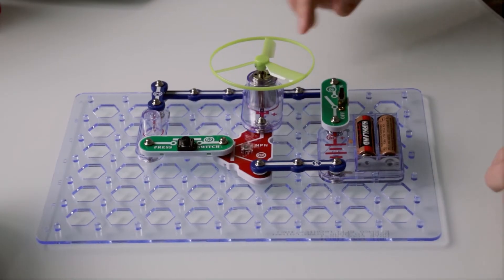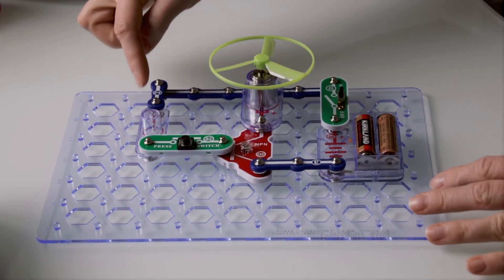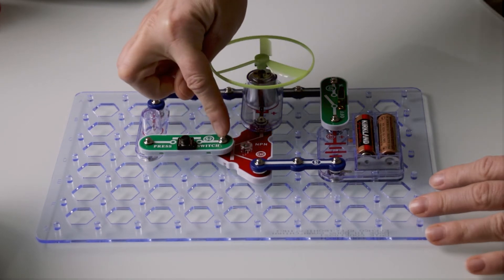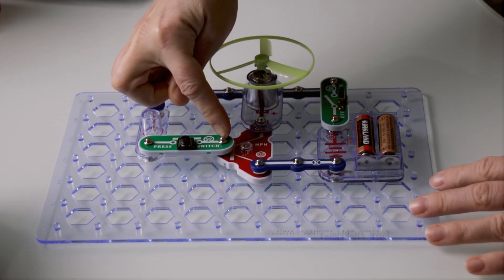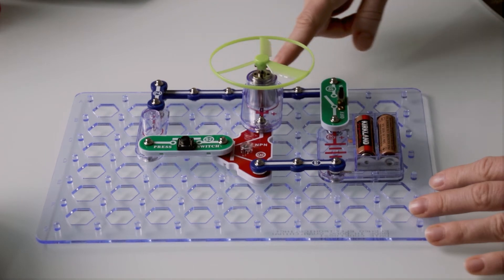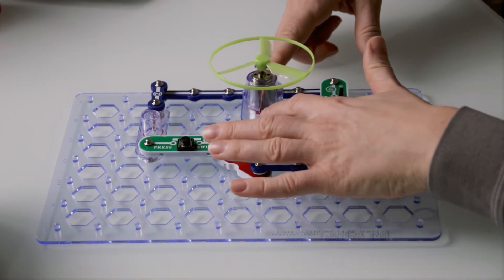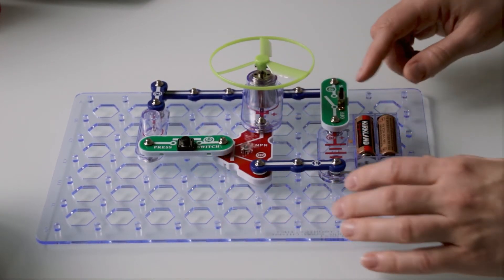The NPN transistor uses the lamp current to control the motor current. A small current through the lamp branch creates a large current through the motor branch. They combine in the transistor and leave through the three snap branch.